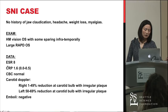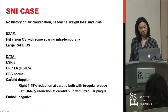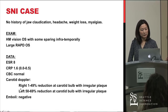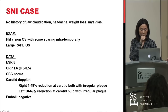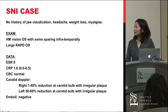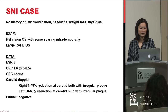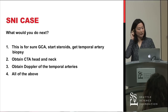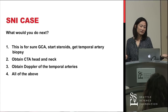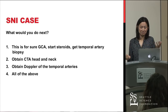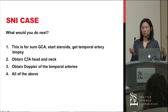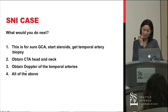His data includes an ESR of 8, a CRP of 1.6, and a normal CBC including platelets. He gets a carotid Doppler showing 50–69% reduction at the left carotid bulb with irregular plaque, and emboli monitoring was negative. The question is what to do next: start steroids and get a temporal artery biopsy, obtain a CTA head and neck, get a Doppler of the temporal arteries, or all of the above?